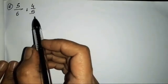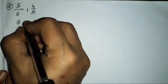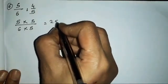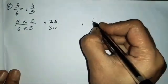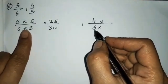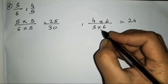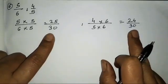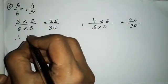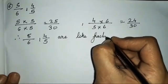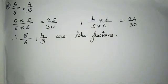The sixth sum is 5 upon 6 and 4 upon 5. In the 6s table 5 will not come and in the 5s table 6 will not come, so we cross multiply. First fraction multiplied by 5: 5 fives are 25, 6 fives are 30. Second fraction multiplied by 6: 4 sixes are 24, 5 sixes are 30. We have got the denominators the same, therefore 5 upon 6 and 4 upon 5 are like fractions because their denominators are the same.